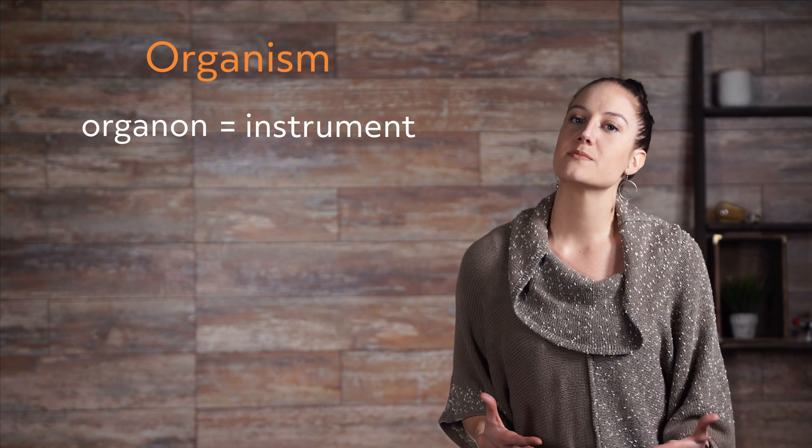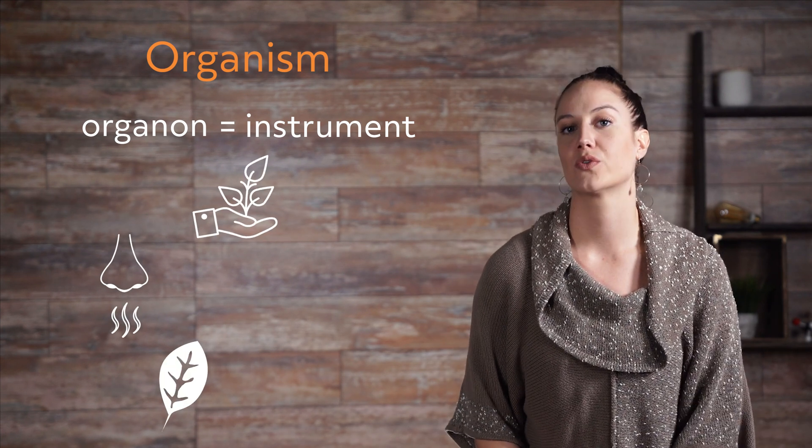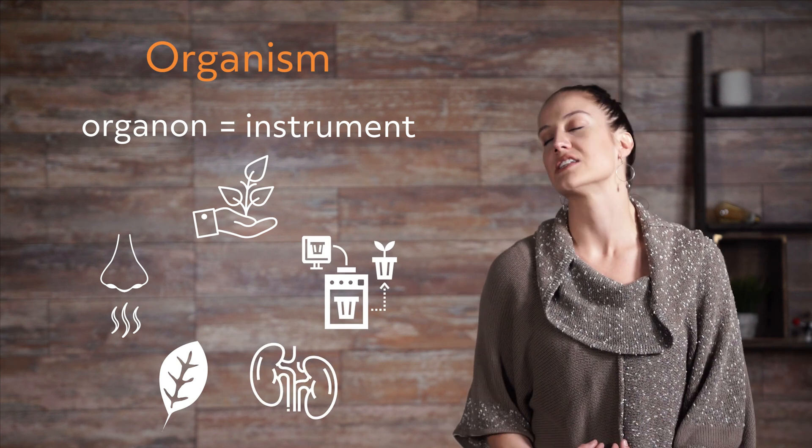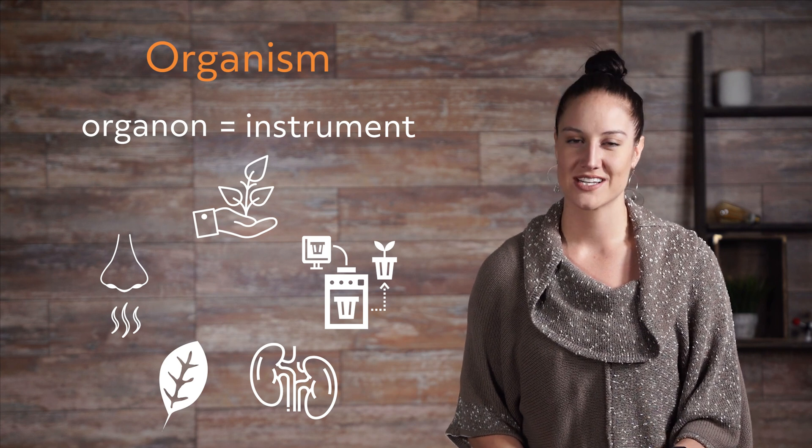Hey guys, welcome to this Mometrix video on the basic characteristics of an organism. Before we dive in too deep, let's define an organism. Organism comes from the Greek word argonon, which literally means instrument. In short, an organism is anything that is living, senses, experiences growth, reproduces, and works to regulate internal conditions. But that is in short — let's go a little deeper and look at the seven characteristics of a living organism.